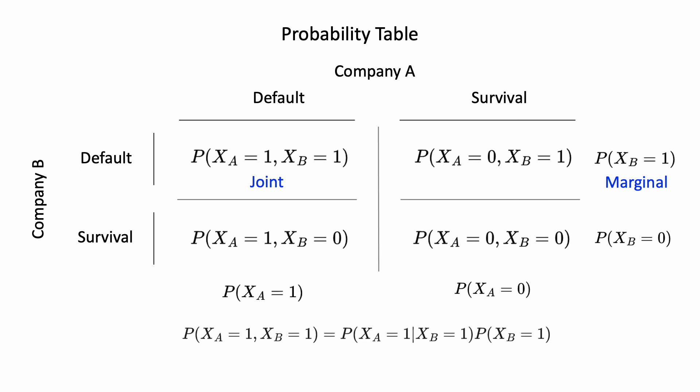Finally, we can also write down each cell with a formula of conditional probability. For example, the joint default probability is the product of one conditioned on the other, multiplied by the probability of the other happening. Which means that the joint probability is the product of the marginal probability and the conditional probability. This is related to Bayesian inference as well.